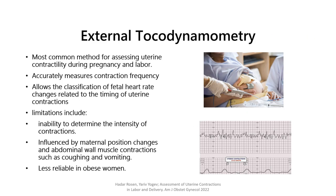External tocodynamometry is the most common method for assessing uterine contractility during pregnancy and labor. It accurately measures contraction frequency and allows the classification of fetal heart rate changes related to the timing of uterine contractions. Its limitations include the inability to determine the intensity of contractions, and it is influenced by maternal position changes and abdominal wall contractions such as coughing and vomiting, and is less reliable in obese women.